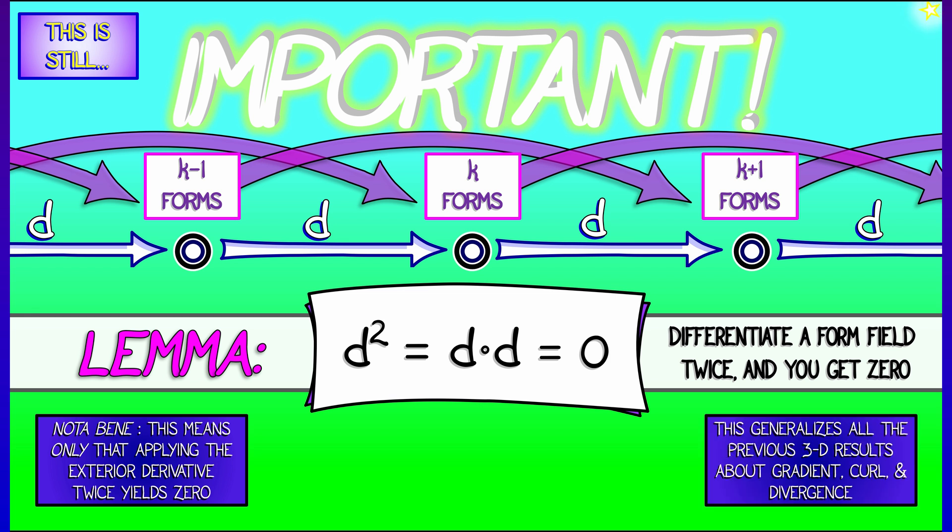What this does is it generalizes all of the previous three-dimensional results, things like the curl of a gradient is zero or the divergence of a curl is zero. Now we have this for arbitrary form fields in arbitrary dimensions.